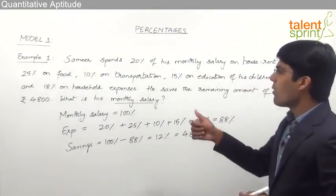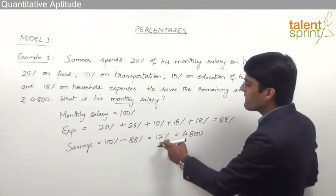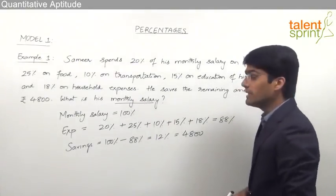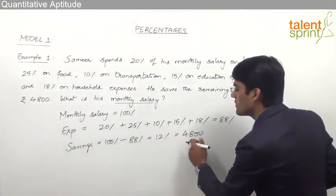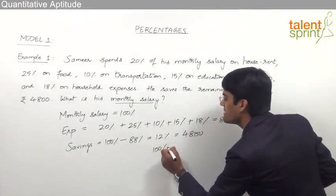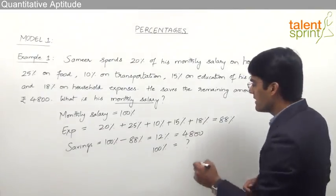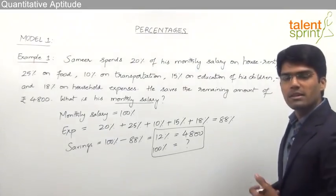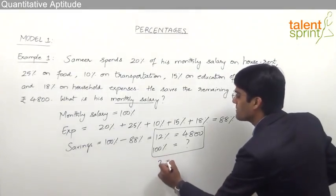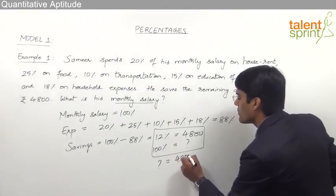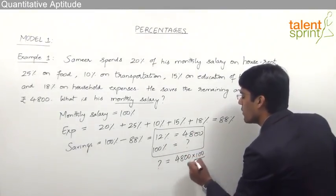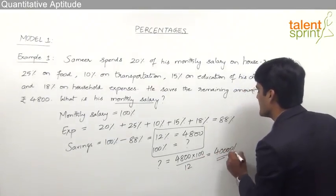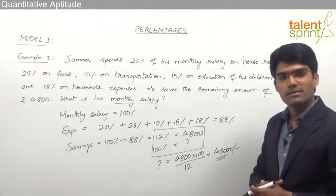The question is: what is his monthly salary? We know that 12% is equivalent to Rs. 4,800 and we are supposed to find out his monthly salary, which is 100%. So if 12% is 4,800, what is 100%? We know one percentage value and need to calculate the other, so simply cross multiply. His monthly salary will be equal to 4,800 × 100 ÷ 12, which comes out to be Rs. 40,000.